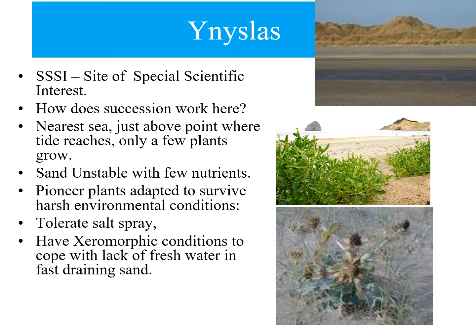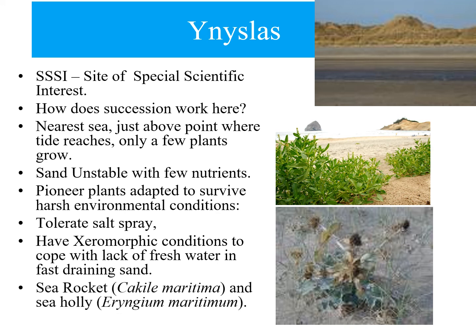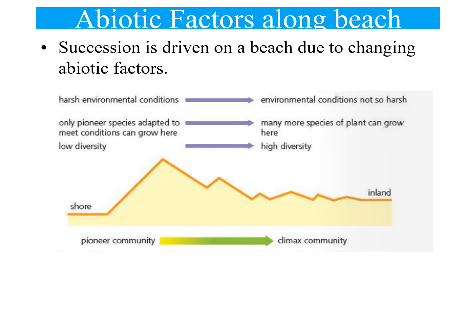Pioneer plants here must be adapted to survive harsh conditions — hollow stems, salt spray — and what we call xeromorphic conditions due to a lack of fresh water. Examples include sea rocket. As you move away from the sea, the sand dunes become more stable, environmental conditions become more favourable, and more species can develop. The sand gradually becomes more like soil, and biodiversity increases away from the sea.